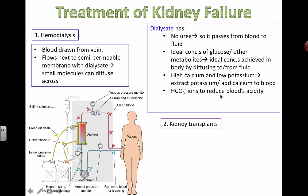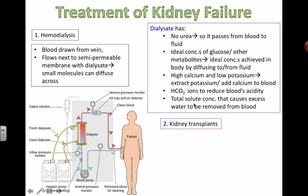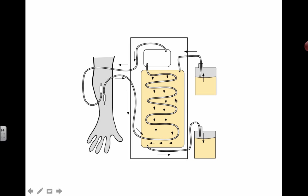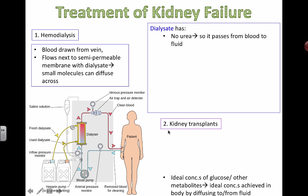Hydrogen carbonate ions in the dialysate help reduce the blood's acidity. The total solute concentration of the dialysate also causes excess water to be removed from the blood by osmosis — water moves towards saltier areas, from lower to higher solute concentration. So if the dialysate contains more salt, water from your blood moves into it, removing any excess water.